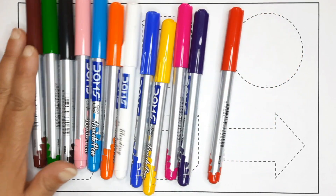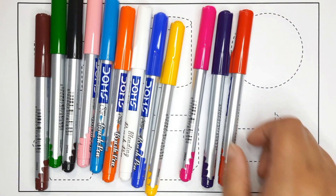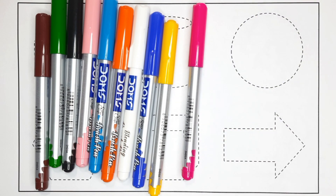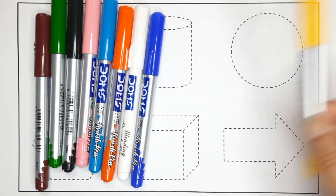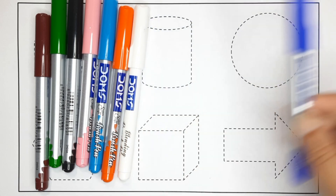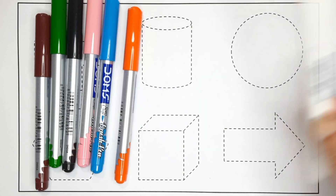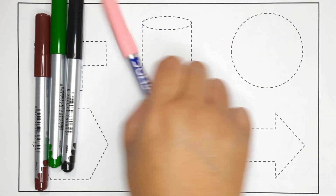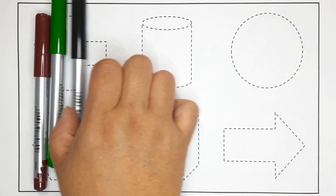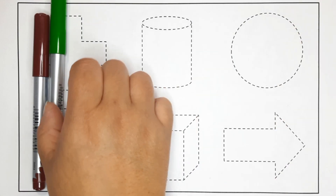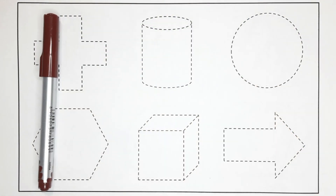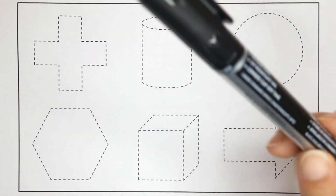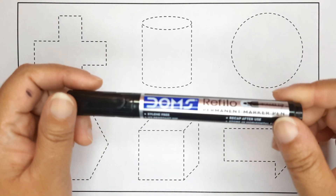These are our lovely colors: red, purple, pink, yellow, blue, white, orange, sky blue, light pink, black, green, brown. Which color is this? This is black color.